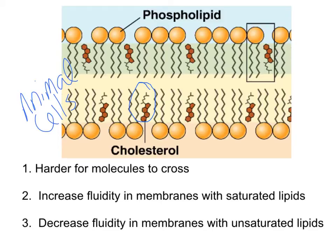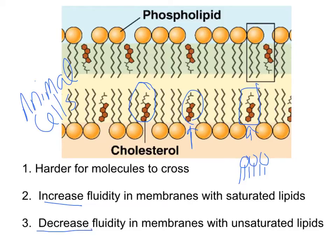Cholesterol can also help increase or decrease the fluidity of the membrane. In membranes with a lot of saturated lipids, where phospholipids are packed tight, wedging cholesterol in between opens up some space — increasing fluidity. In membranes with a lot of unsaturated lipids, cholesterol can decrease fluidity by filling in the gaps from those bent tails and giving the unsaturated lipids somewhere to anchor. So in a saturated membrane it increases fluidity; in an unsaturated membrane it decreases fluidity.